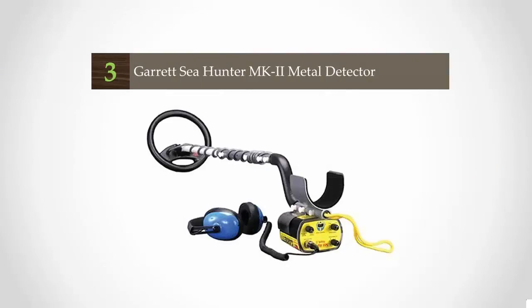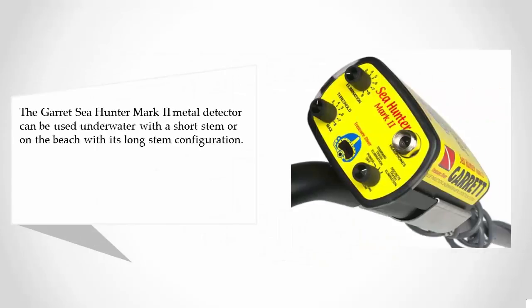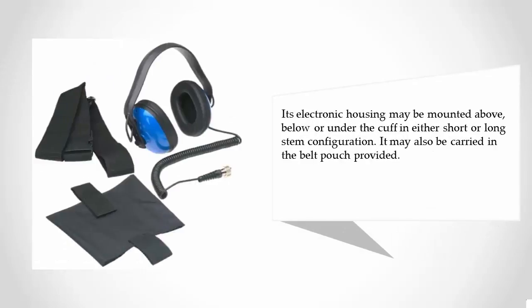Halfway through our list at number three, the Garrett Sea Hunter Mark II metal detector can be used underwater with a short stem or on the beach with its long stem configuration. Its electronic housing may be mounted above, below, or under the cuff in either short or long stem configuration.